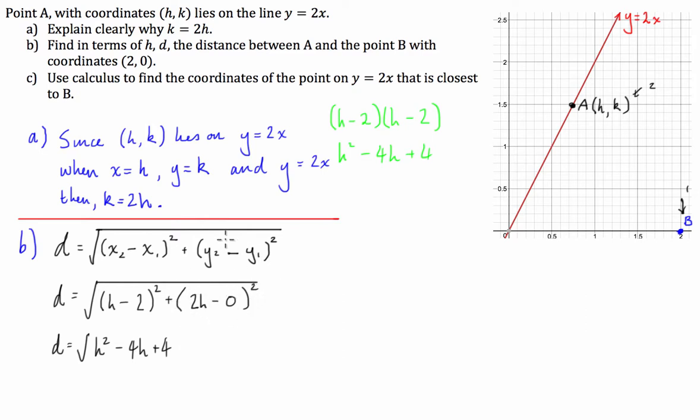And then here we've got 2h all squared because the 0 makes no difference. So this is just going to be 2h squared is 4h squared. And then I put all of that under a square root sign. And finally, combine our like terms. We have d is equal to the square root h squared plus 4h squared is you guessed it 5h squared minus 4h plus 4 all square rooted. So that's what we've found in terms of h, the distance between this point B and this point A here, which can move along this line.